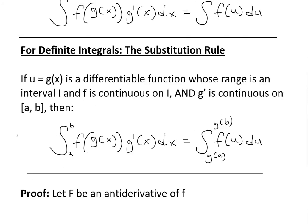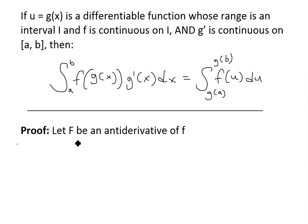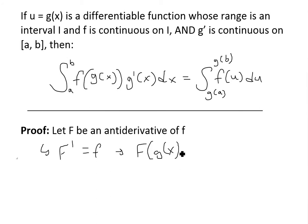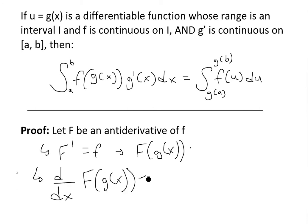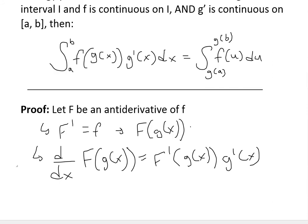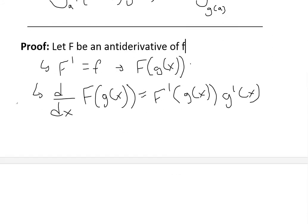To prove this theorem — even though it seems straightforward — let capital F be an antiderivative of f, meaning F′ = f. Now consider F(g(x)). Taking the derivative using the chain rule: d/dx of F(g(x)) equals F′(g(x))·g′(x). Since F′ = f, this equals f(g(x))·g′(x).